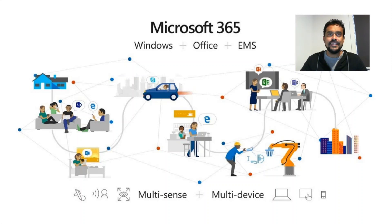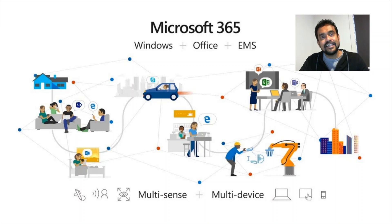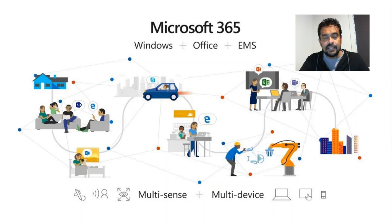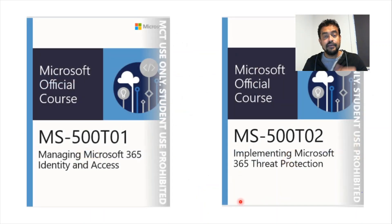So how is this different from Microsoft 365? Microsoft 365 is a combination of three products: first, Office 365; second, Windows 10 Enterprise operating system; and third, EMS — Enterprise Mobility and Security. Microsoft has combined all these products into a single subscription.